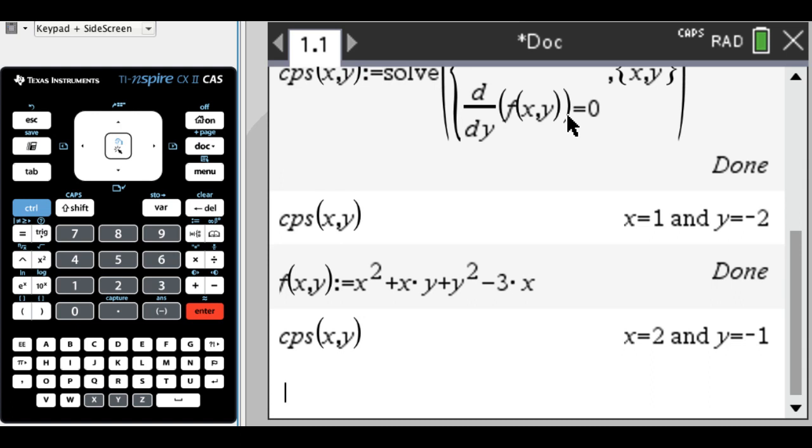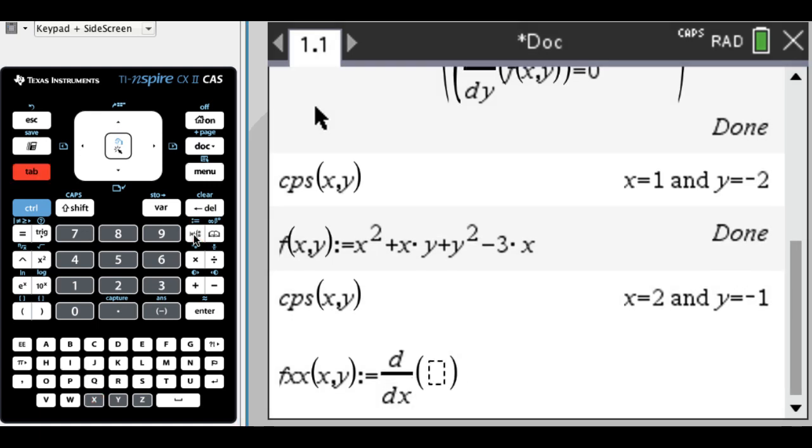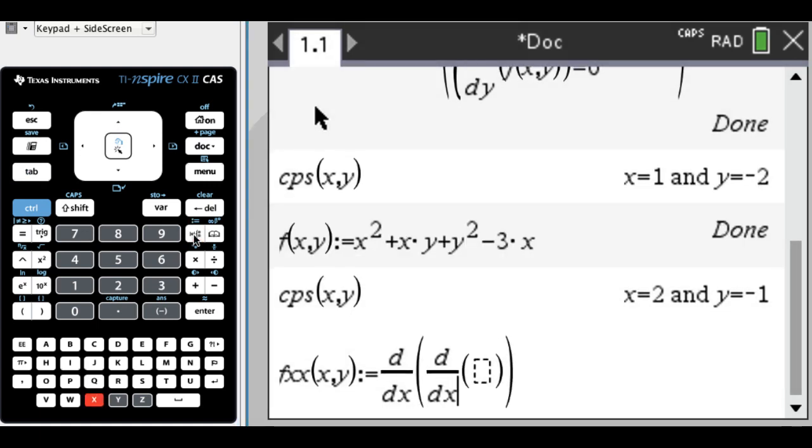Okay. So now I need to be able to test this thing. To do that, I am first going to define a lot of functions. So I'm going to define partial x, x. So the second partial derivative with respect to x twice. So I'm going to call that f x, x of x, y, and then colon equals, and then I need to take the derivative. So I'm going to go to template, derivative with respect to x, tab, template, derivative with respect to x of var, f of x, y. So this is the second partial derivative with respect to x twice.